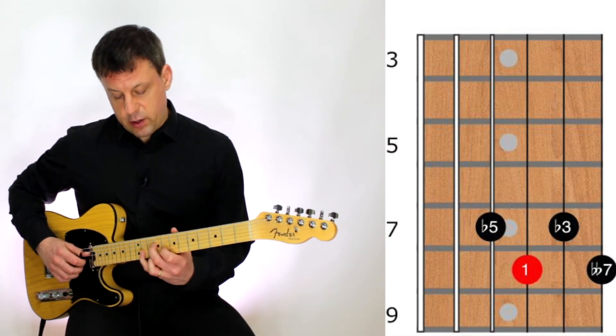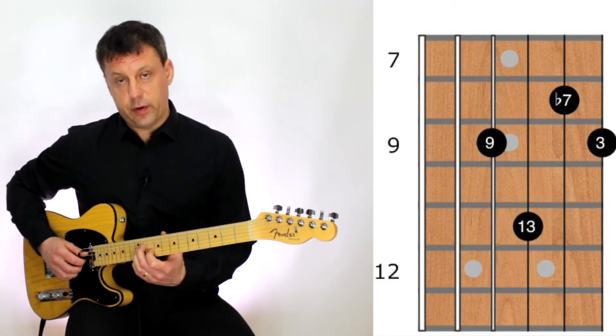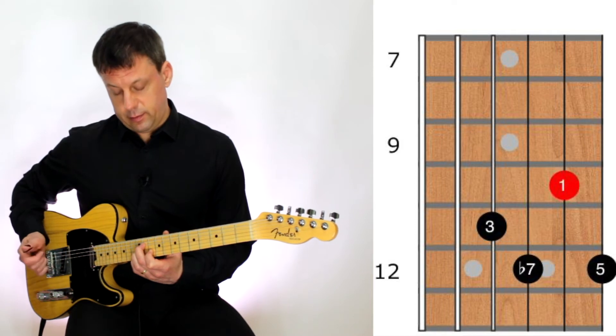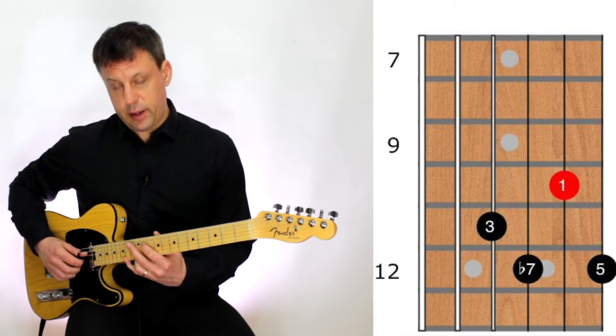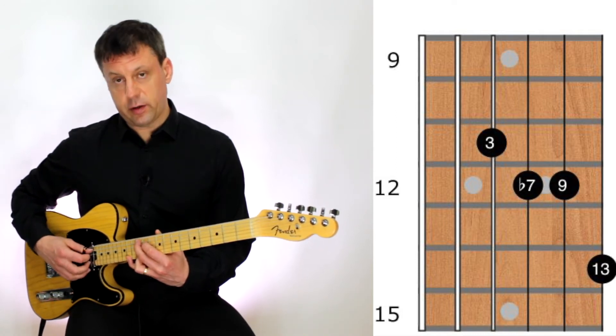Then we're going to go to an A dominant 13 chord. Interesting voicing. To a straightforward A dominant 7, then an A13. And again, this is a good contender for adding a bass note on the A string on fret 12.